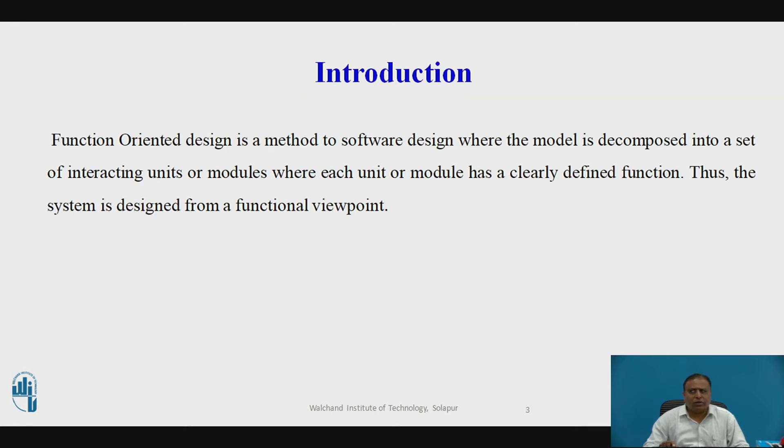Introduction. The design process for software systems often has two levels. At the first level, the focus is on deciding which modules are needed for the system on the basis of software required specification and how the modules should be interconnected. The function-oriented design is a method to software design where the module is decomposed into a set of interacting units or modules where each unit or module has a clearly defined function. Thus, the system is designed from a functional viewpoint.